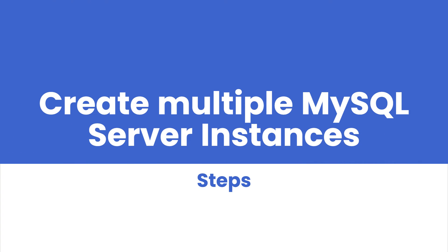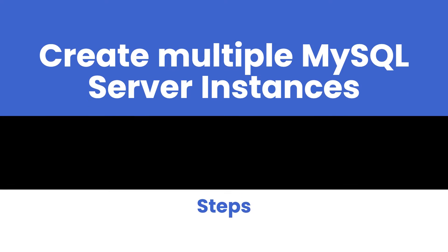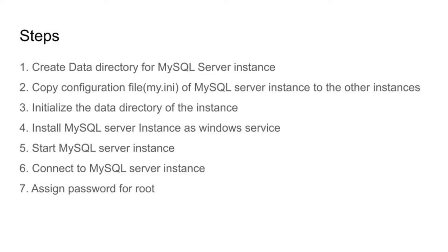So we're going to create two more instances. These are the steps to create an instance from an existing installation of MySQL server: first, create a data directory for that instance; then copy the configuration file from the existing instance and change some configuration options that are unique to this instance; then initialize the data directory; then install the instance's Windows service; then start the service and assign a password.